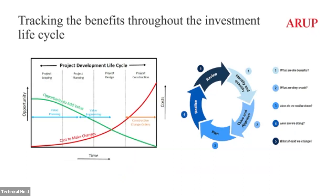It's also important to consider how this is used through the life cycle of a project. There's the potential to maximize the opportunity to add value very much at the start of the project — when you're prioritizing the need or prioritizing the options — that's where there's the potential to make the biggest change and include the most benefits in a solution. But it also needs to feed through into project design, making sure that we don't value-engineer or cost-engineer out some of these wider benefits, as well as into benefits realization so that we can track the value that these schemes provide. Taking this identify, quantify, value, appraise, plan, realize, and review approach allows us to do that.